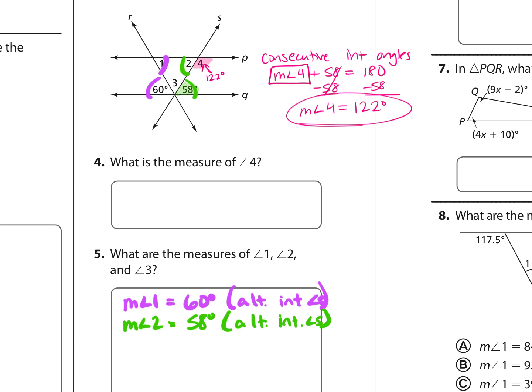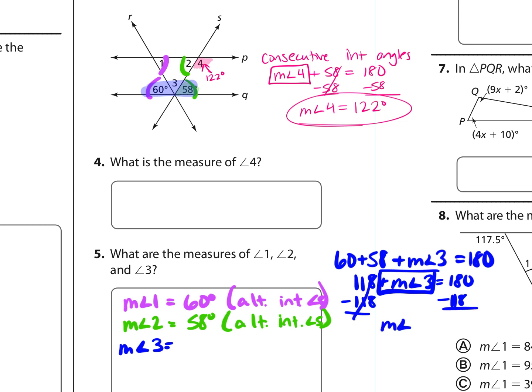And then the measure of angle 3 could be found different ways. One way is we could notice that 60, 58, and angle 3 are supplementary. So I'm going to say 60 plus 58 plus the measure of angle 3 equals 180 degrees. So that is 118 plus the measure of angle 3 is 180 degrees. We want angle 3 by itself, so we're going to subtract 118 from both sides. We get that the measure of angle 3 is 62 degrees. We know that because of those three angles being supplementary.